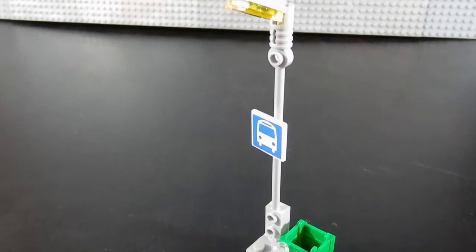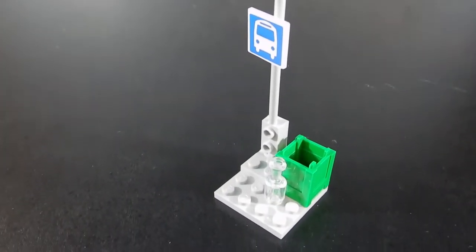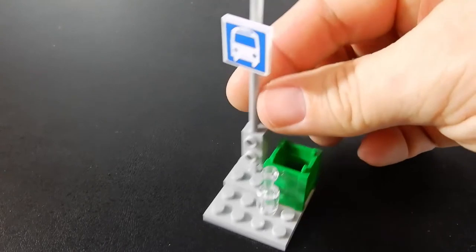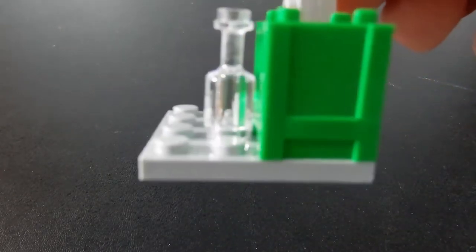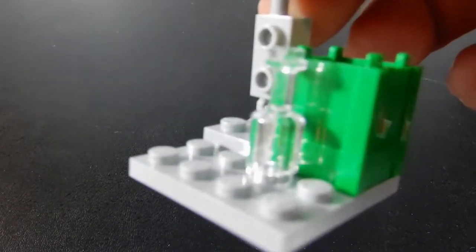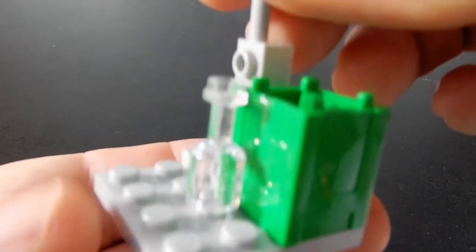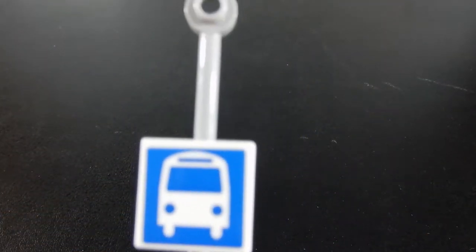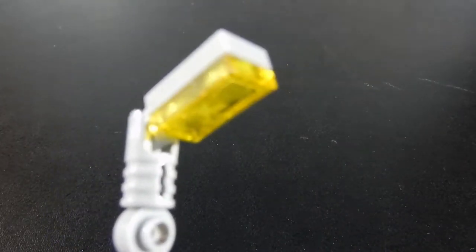Next we have this street lamp bus stop trash can. The trash can is just the square trash can that we've seen and there's a clear bottle there next to it. And then there's the bus stop sign which is a sticker. And then a trans yellow tile representing the street light.